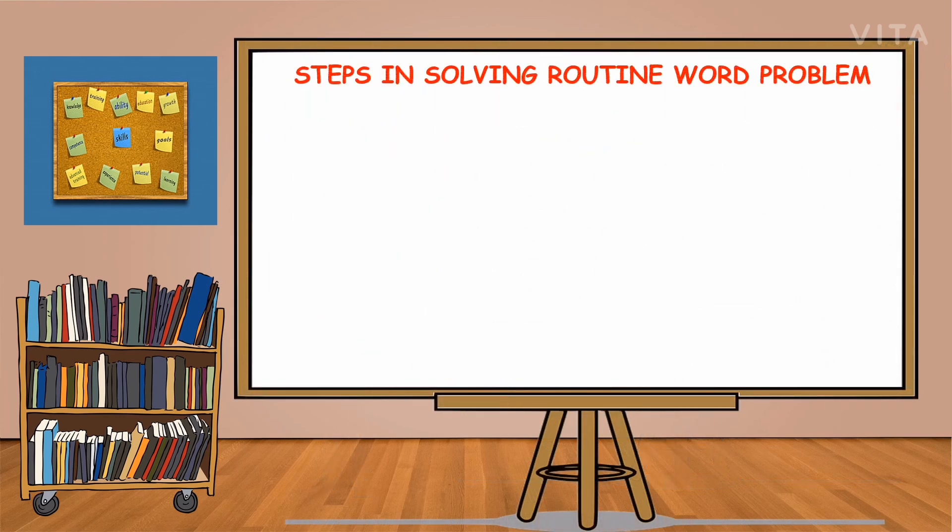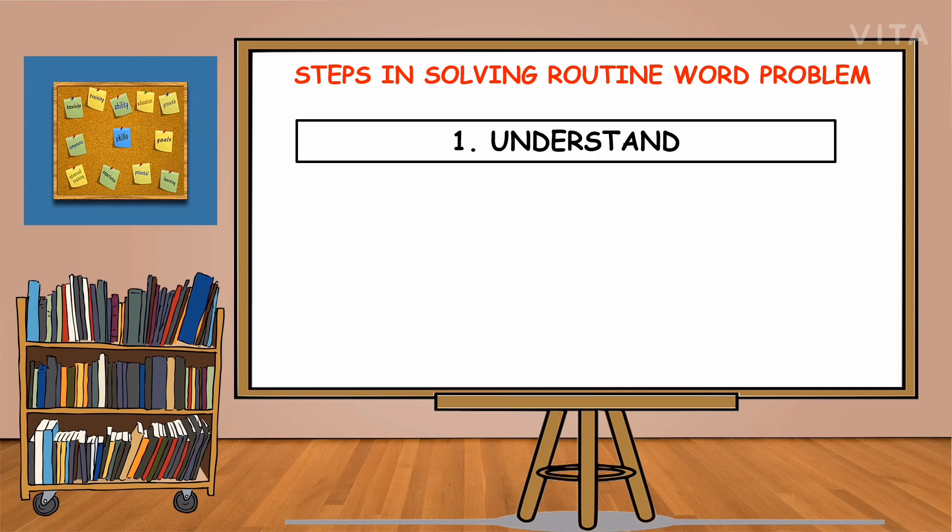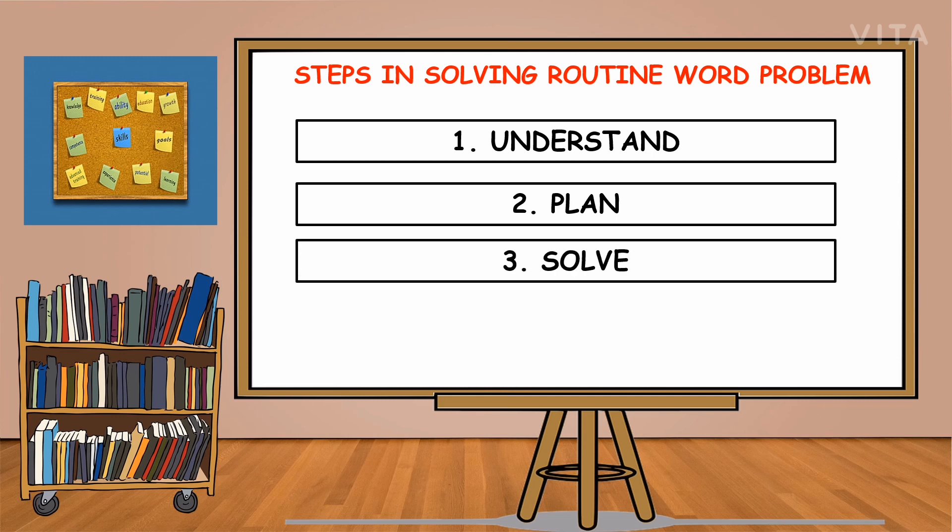Here are the steps in solving routine word problems. The first step is to understand the problem, then second is to plan, third is to solve, and fourth is to check. We're going to use these steps to solve the given problem.